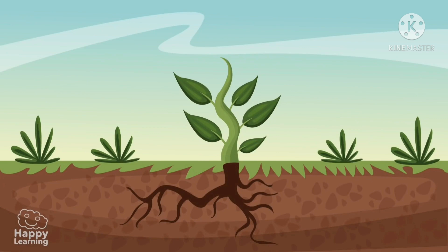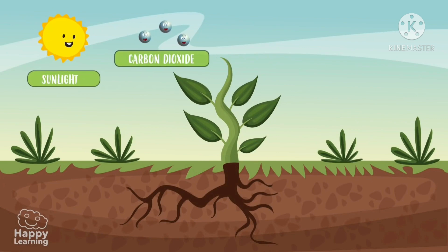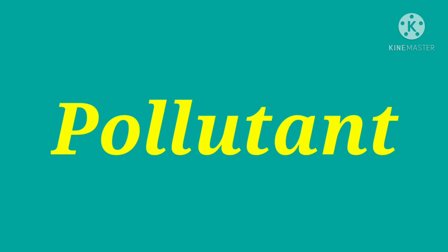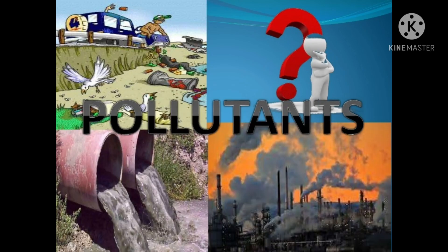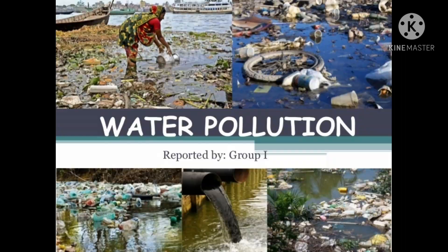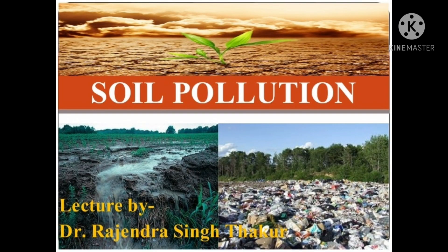Plants absorb sunlight, carbon dioxide and water to manufacture sugar as their food. Question 6. What is an object that causes pollution called? The correct answer is pollutant. Pollutants are the elements, molecules and particles involved in pollution.